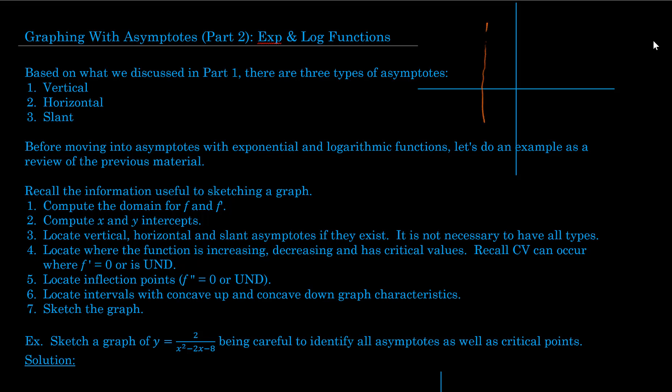Vertical asymptotes are, as the name implies, asymptotes that run vertically. Horizontal asymptotes are those that run horizontally, and slant asymptotes run at an angle. They can either be increasing or decreasing, but a slant asymptote will always be a line. It is possible to have vertical asymptotes as well as horizontal asymptotes, or vertical asymptotes as well as slant asymptotes. You won't have both horizontal and slant at the same time.